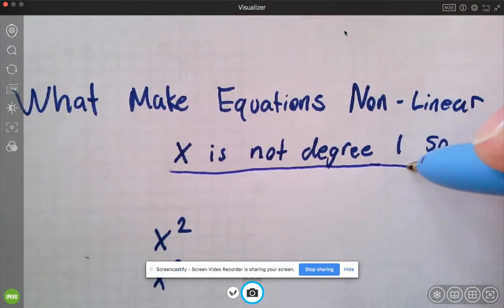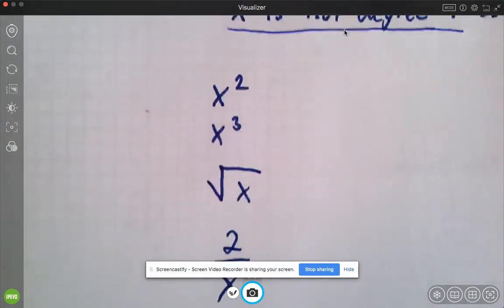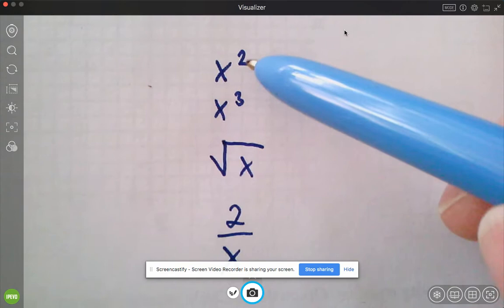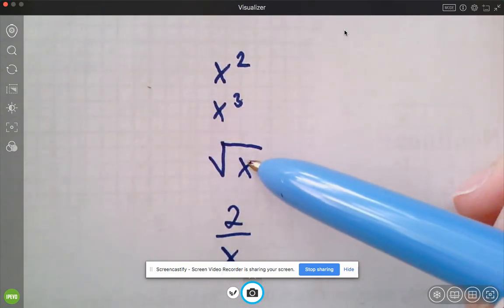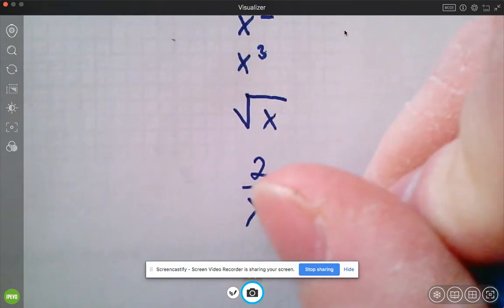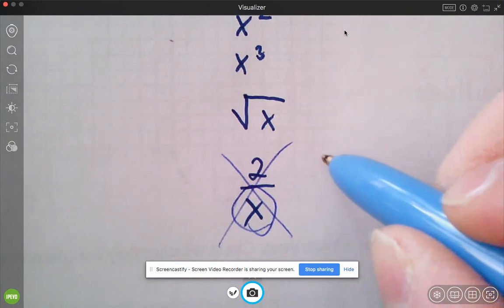So basically that means it's raised to some type of exponent, and what that means is it's going to look like one of these things. So you'll have like x raised to an exponent of 2 or 3, square root of x, and you cannot have the x in the denominator. But technically that would be nonlinear, but you could have the x up here, that would be linear there.